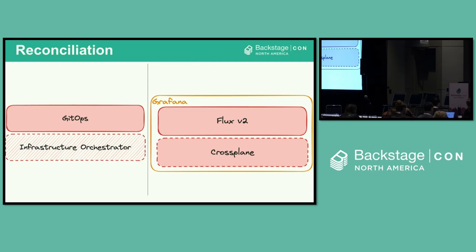Finally, we have the reconciliation layer, comprised of a GitOps brick and an optional infrastructure orchestrator brick. We use Flux as our GitOps tool and it uses the Kubernetes manifest repository as a source. Crossplane is comprised of multiple providers which read in the CRDs applied by Flux and manage those cloud resources. In summary, Flux reconciles Kubernetes manifests and Crossplane reconciles cloud infrastructure resources declaratively.